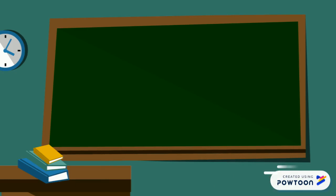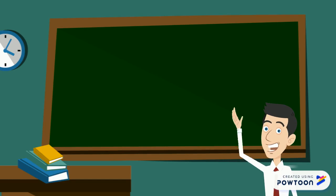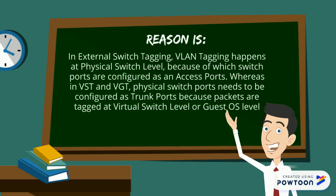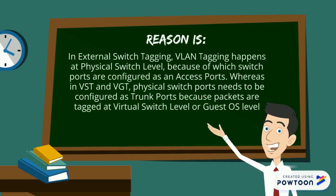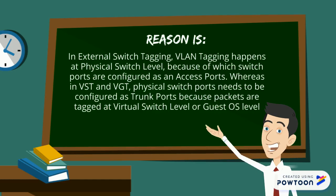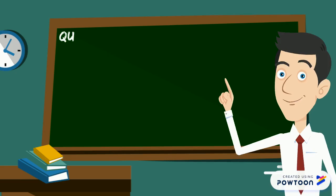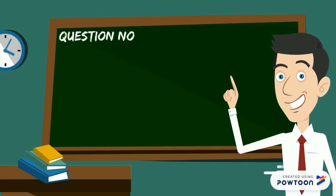Let's understand the reason why. In external switch tagging, VLAN tagging happens at the physical switch level, because of which switch ports are configured as access ports. Whereas in virtual switch tagging and guest tagging, the physical switch port needs to be configured as a trunk port, because tagging happens at the OS level.